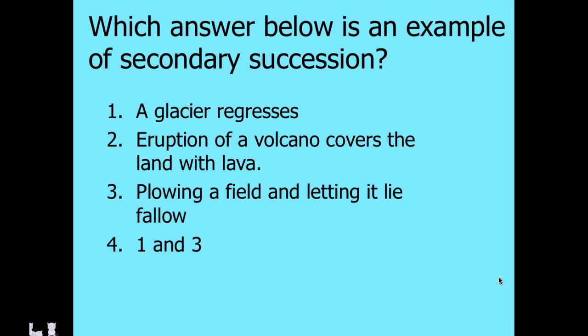An example of secondary succession: pause the video and when you're ready advance to the answer. Plowing the field and letting it go fallow would be secondary succession. If you had a glacier regressing or a volcanic eruption, those would take us back to a need for primary succession all over again — essentially bringing us back to a state of lifelessness.